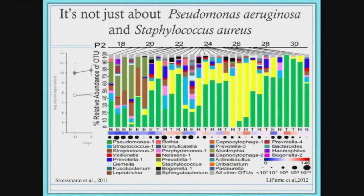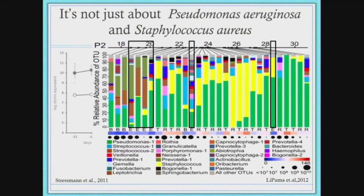This is a longitudinal study done with one individual. The numbers on top correspond to the individual's age, and the bars represent each sputum sampling event sent for sequencing. The colors correspond to different bacteria — more of a color means more of that bacteria present. I want to highlight the ones marked with E, which stands for an exacerbation — when the individual was undergoing a respiratory infection. There's a large diversity of bacteria present, so it may not be just one pathogen causing the exacerbation. Green and yellow represent Staph aureus and Pseudomonas, but as you can see, they're not always the most abundant.